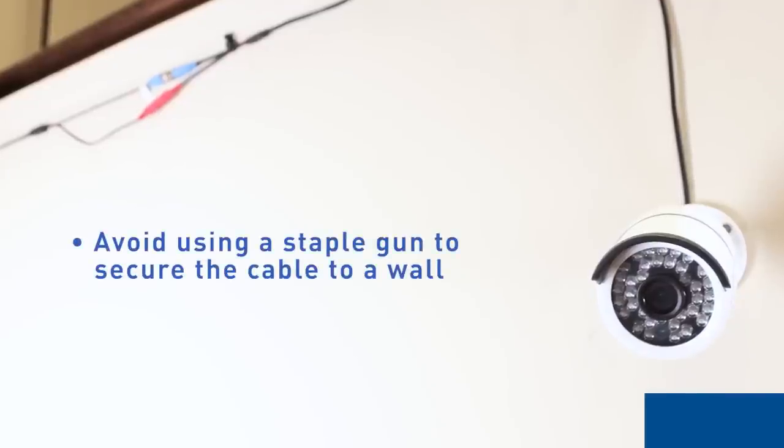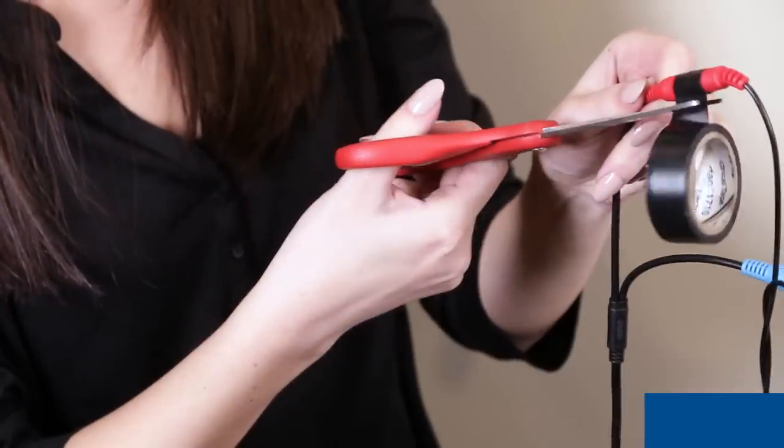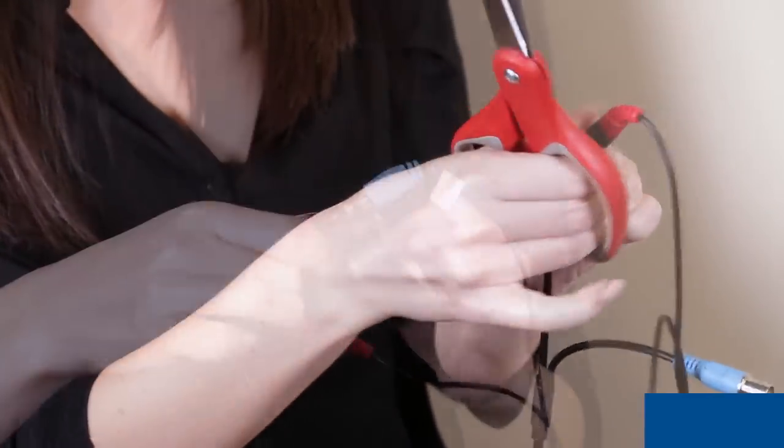Avoid using a staple gun to secure the cable to a wall. If the cable junctions will be outdoors, wrap the connections with electrical tape.